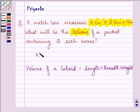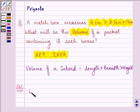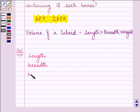The knowledge of this formula is the key idea for this question. Here, the length, breadth, and height of one box are given as 4 cm, 2.5 cm, and 1.5 cm respectively. First, we need to find the volume of one box.